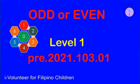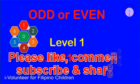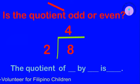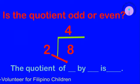In this quiz, all you have to do is to answer in a complete sentence. For example, is the quotient odd or even? Your answer will be: the quotient of eight by two is even.